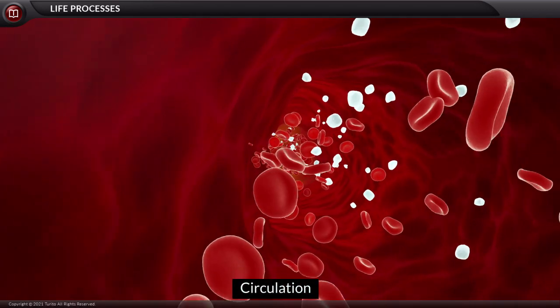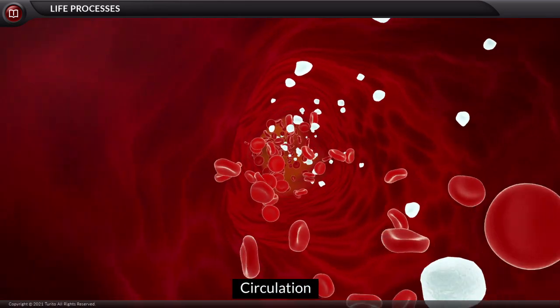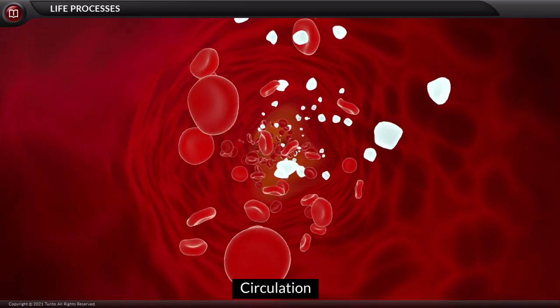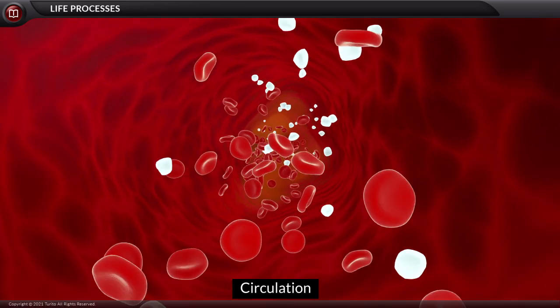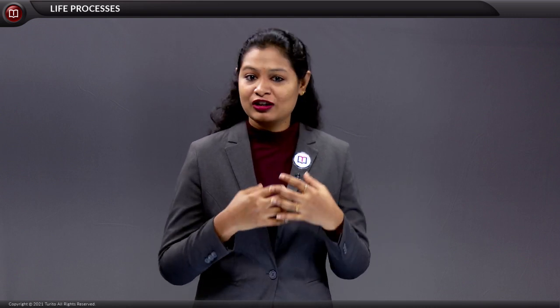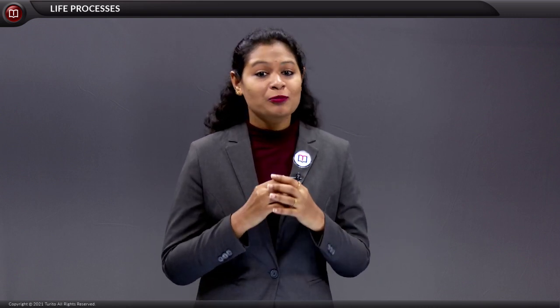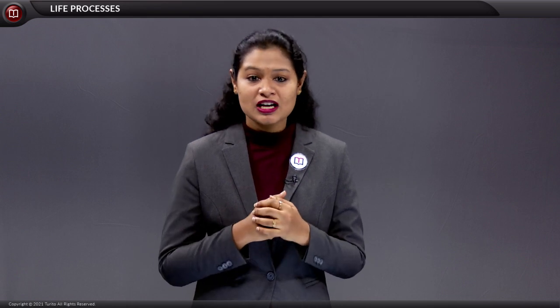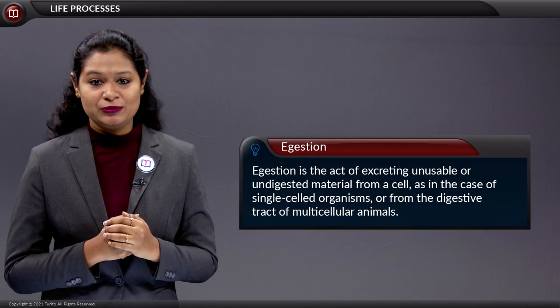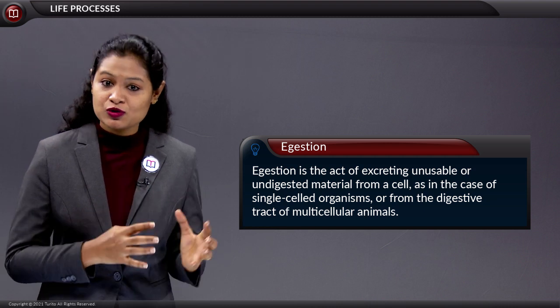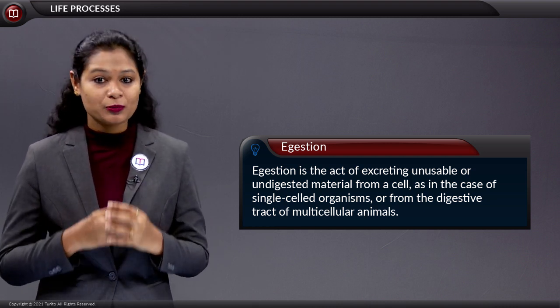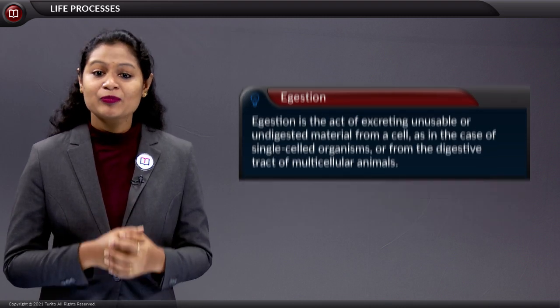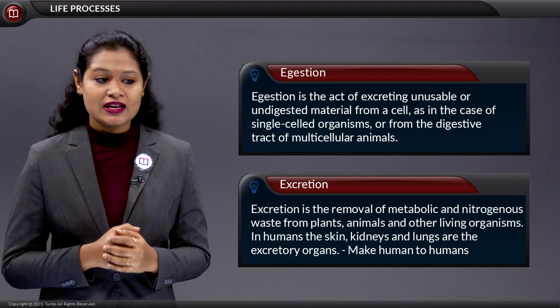There is a need to transport this energy to every cell in the body. For this, we have a circulating medium — blood — which helps transport energy to each and every cell. Now, we have consumed food and utilized the energy, but there is some amount of waste or undigested food remaining in the digestive tract. The process of elimination of undigested food from the digestive tract is called egestion. Additionally, nitrogenous and metabolic waste formed in the body also has to be eliminated, and this elimination process is called excretion.